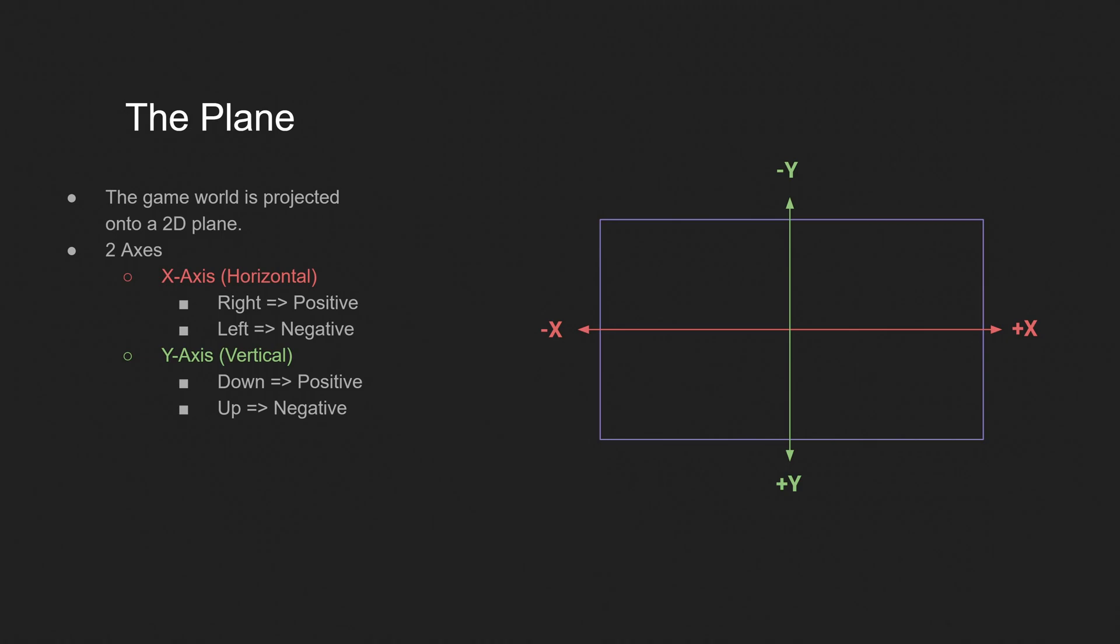So when we're moving right in Godot, that is positive movement on the x-axis. And we're moving left, that's going to be negative movement on the x-axis. And when we're moving down on the y-axis, that's going to be positive movement. And if we're moving up, that's going to be negative movement. So this is all really basic. And if you understand this, you're good to go. And we're just going to move on a little further here.